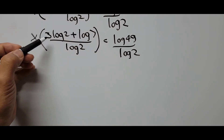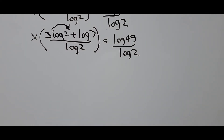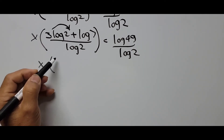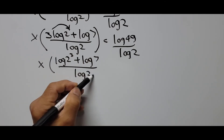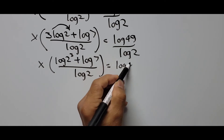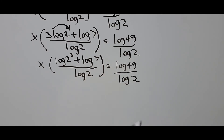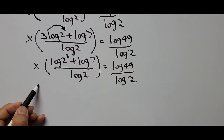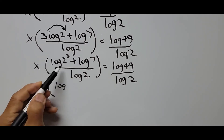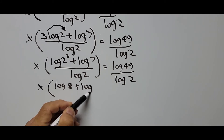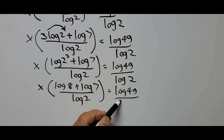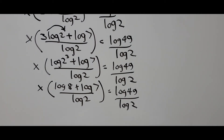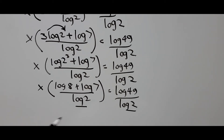We move the 3 to become an exponent on log(2), so we get x times log(2³) which is log(8), plus log(7), divided by log(2), equals log(49) over log(2). We also have log(2) plus log(7) over log(2) on the left equals log(49) over log(2). Notice that log(2) appears in the denominator on both sides of the equation, so we can cancel it.